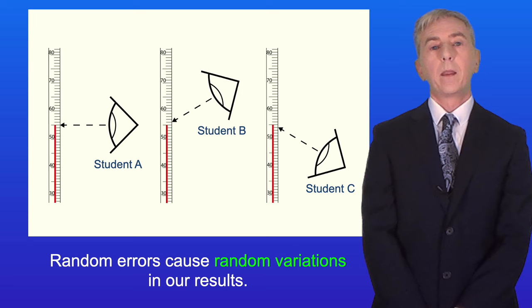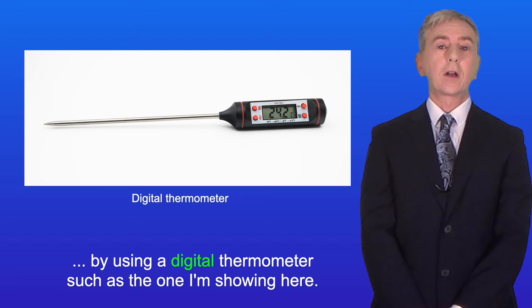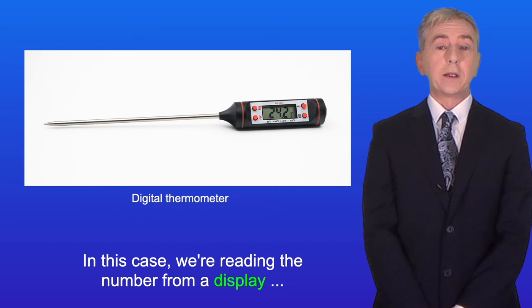Now parallax error due to reading a thermometer can be overcome by using a digital thermometer such as the one I'm showing here. In this case we're reading the number from a display and there's no parallax error.